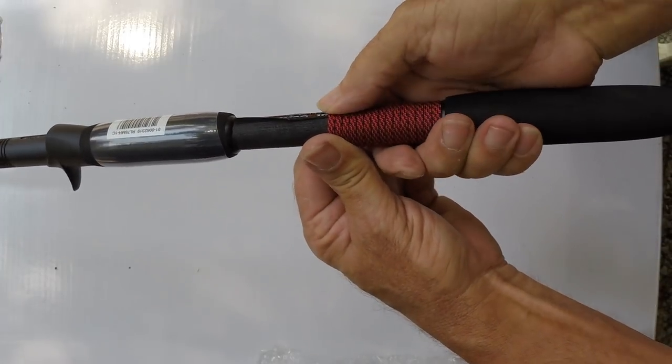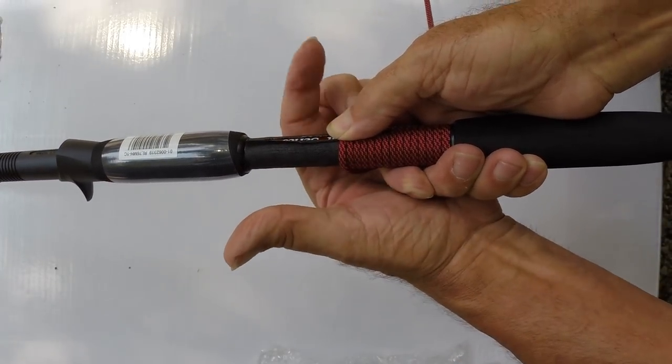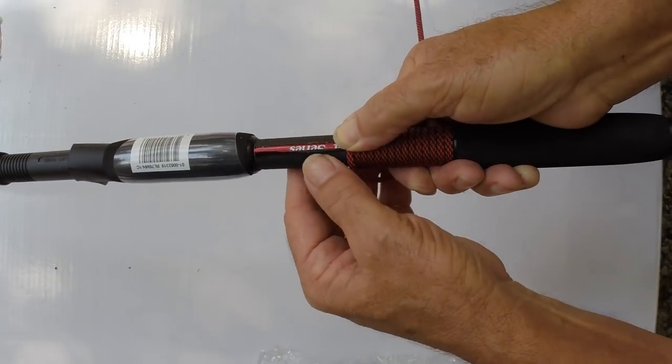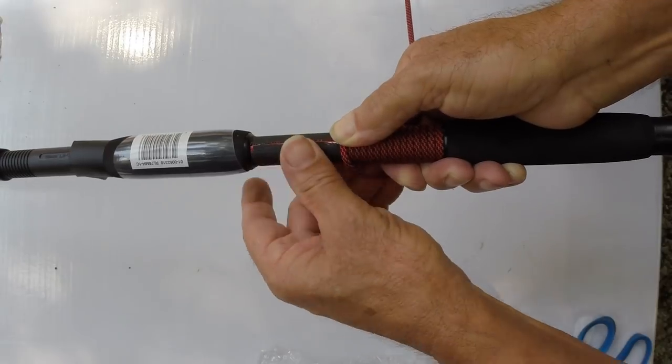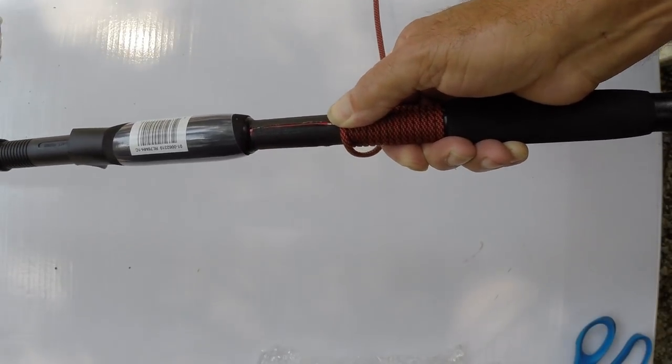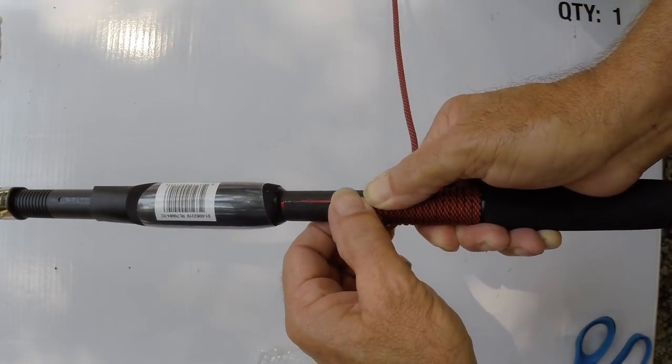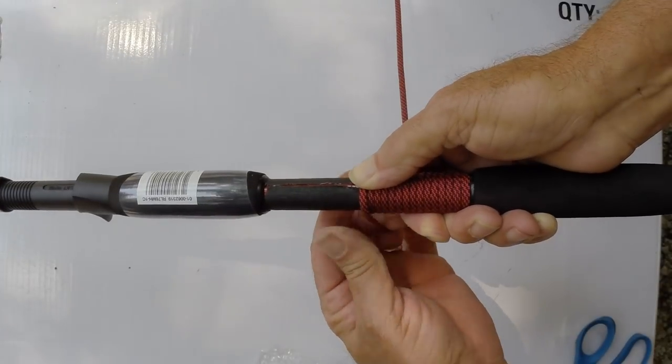As you can see with this finger, as this rod's turning, I'm peeling my tape back a little bit, so rather than letting it get folded over underneath, I'll stop and get that back in place the way it's supposed to be.